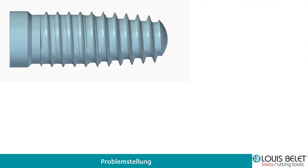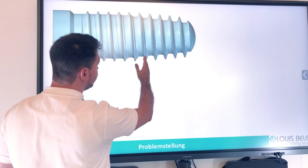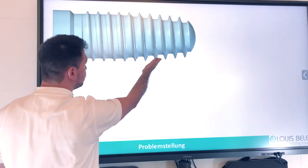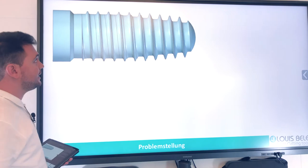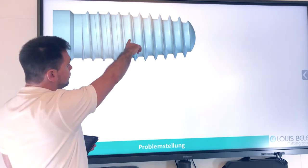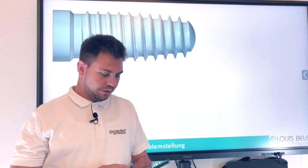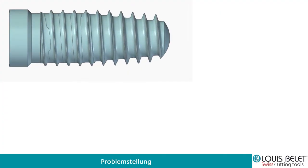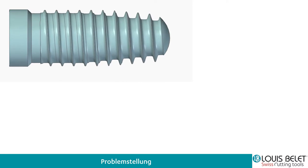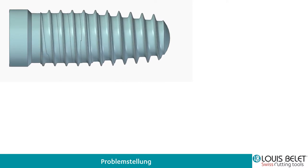Wir kommen hier zu unserem Werkstück, welches wir aus der Dentalindustrie oder der Medizinaltechnik gut kennen. Wir sehen hier ein Gewinde mit einer speziellen Steigung und auch die Flanke, welche zu Beginn konisch ist und dann auf einem Zylinder endet. Wie man sieht, ist der Übergang hier oft die Problematik – es ist wirklich ein Gewinde mit seiner Steigung.